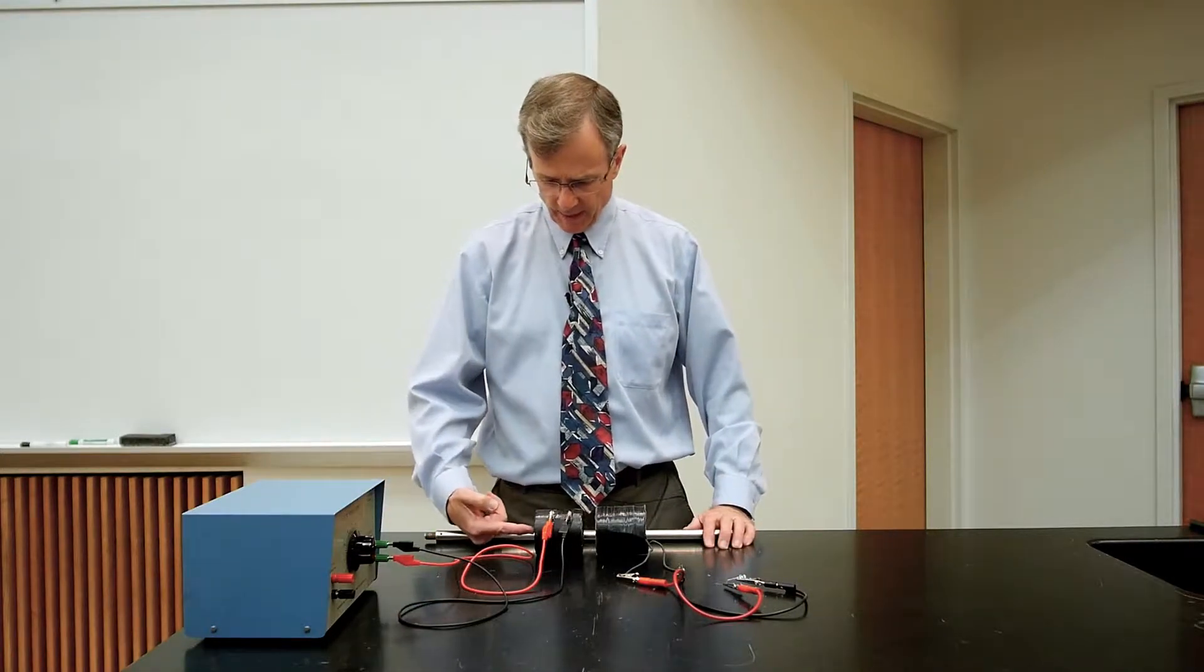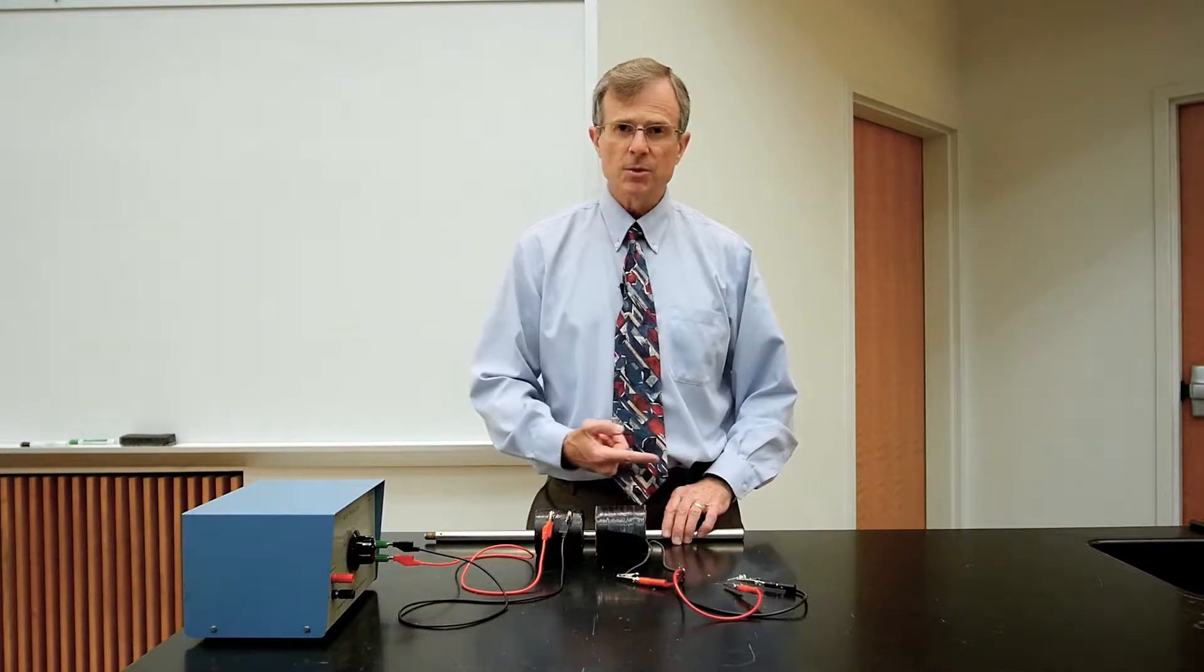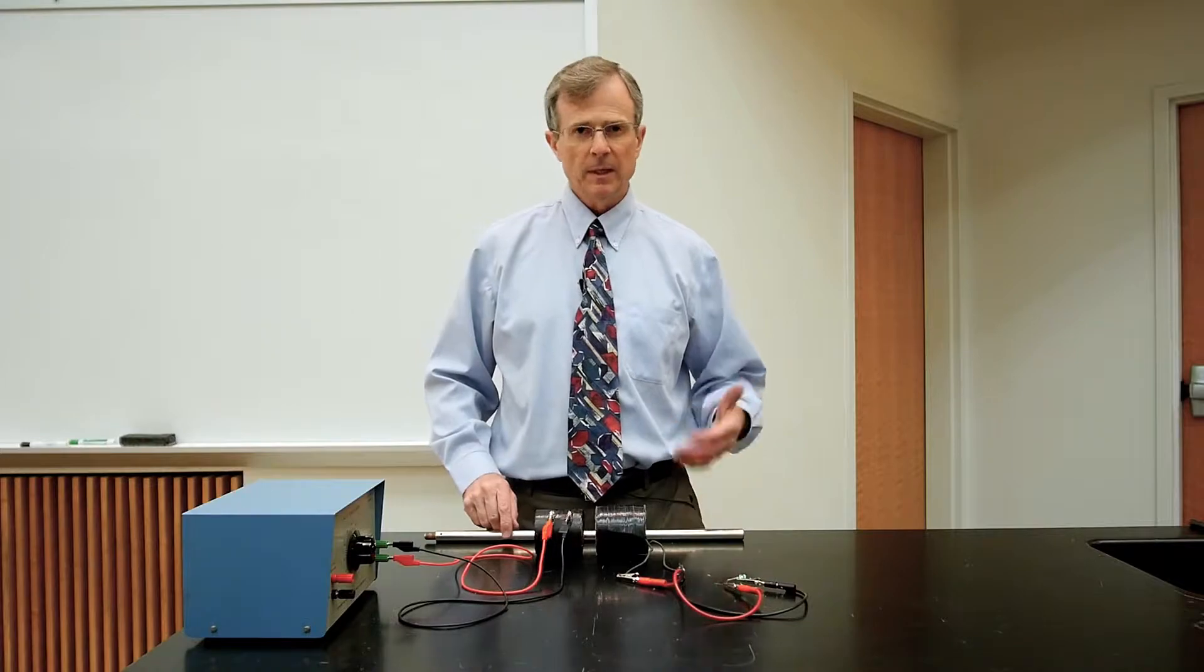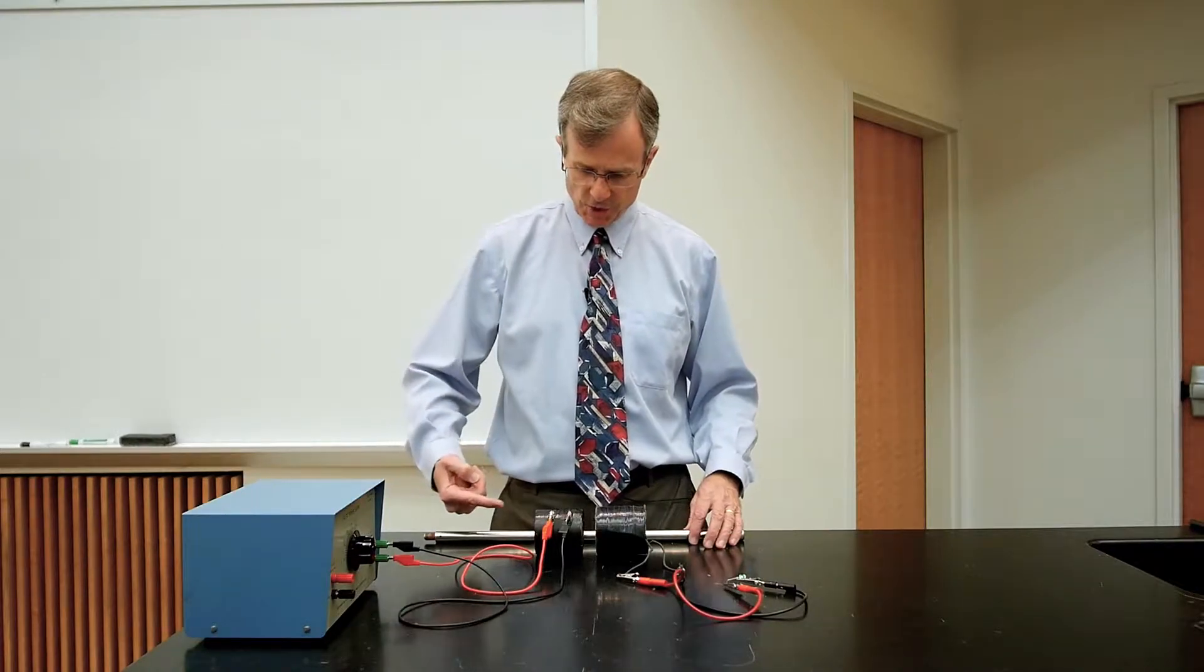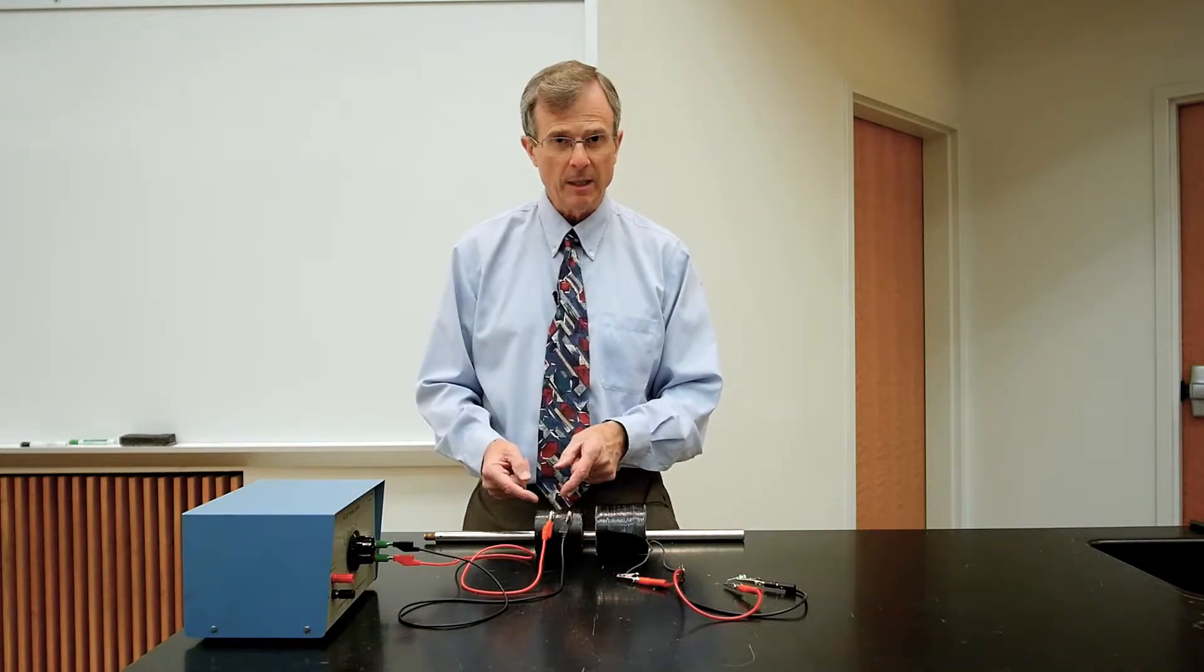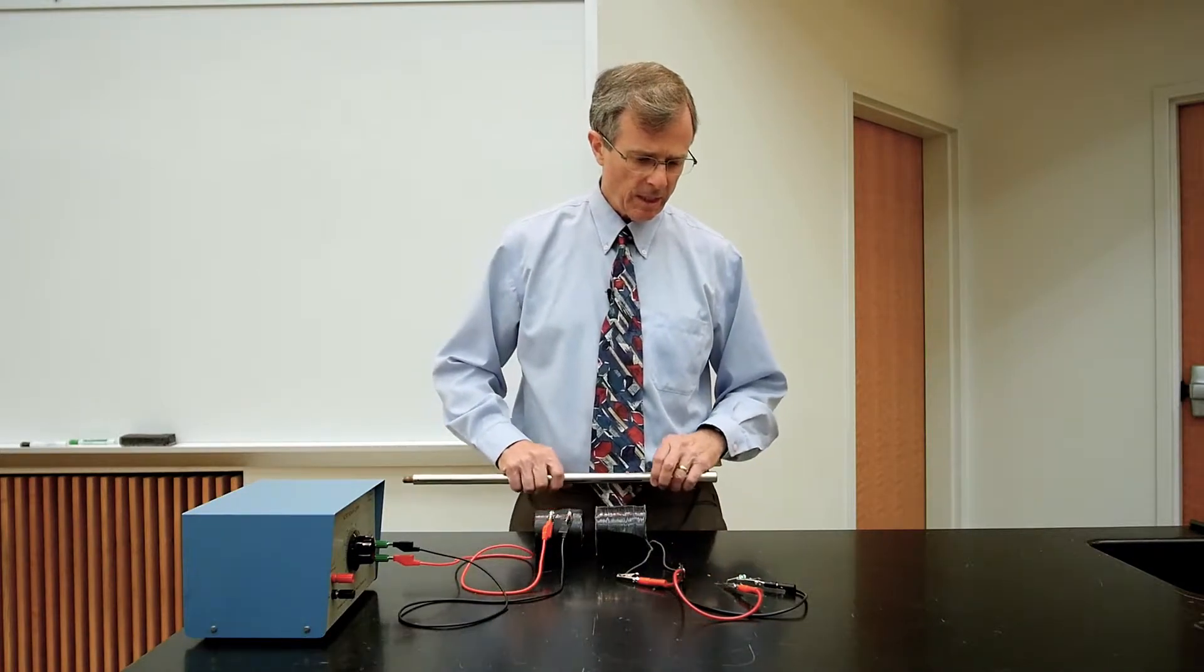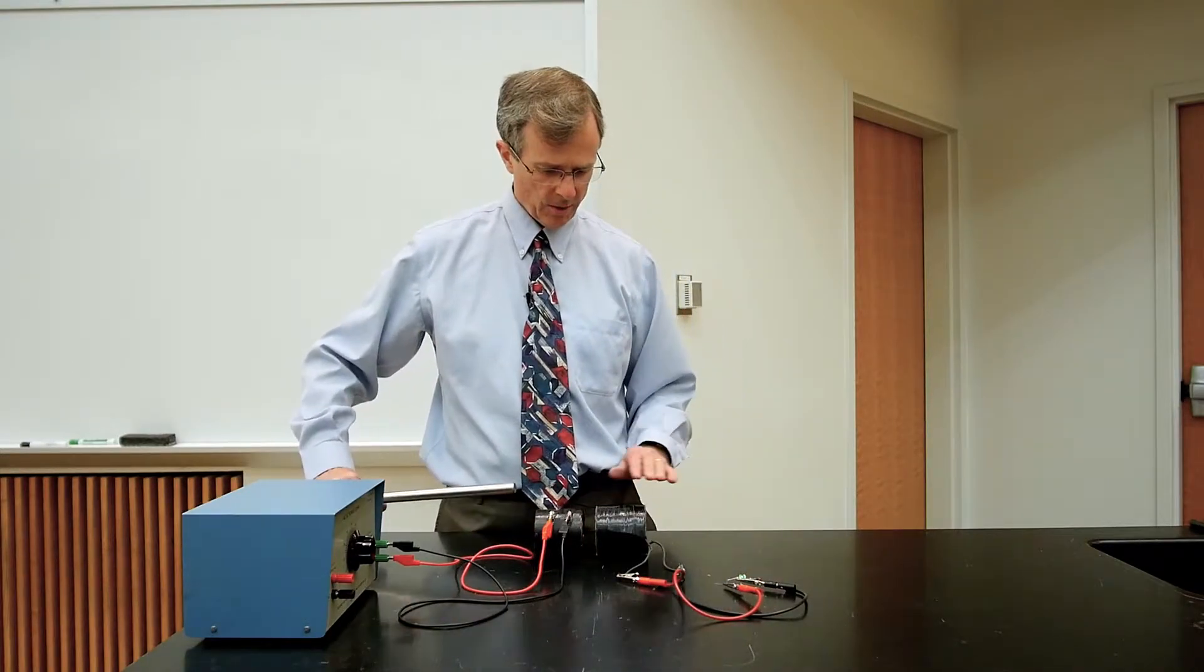I'm going to insert this core through the center of these two coils of wire. And the purpose of the core is to channel the magnetic field from the primary to the secondary. And you should be able to see an increase in the amount of light here,